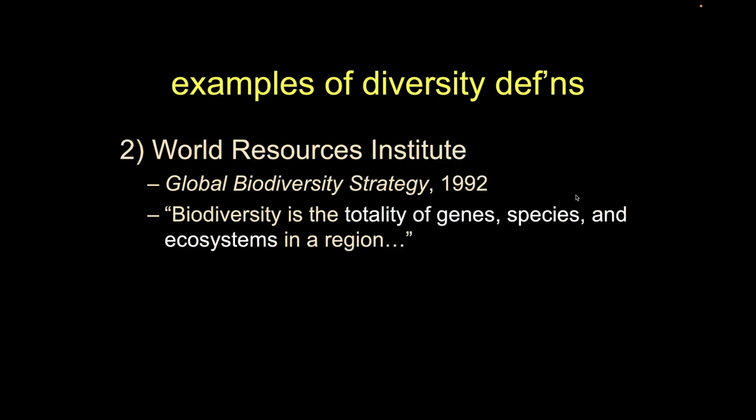Next is the World Resources Institute, an environmental NGO. In 1992, they published a report called Global Biodiversity Strategy and said biodiversity is the totality of genes, species, and ecosystems in a given region. This really emphasizes genes, so including the genetic heritage all the way up to ecosystems.